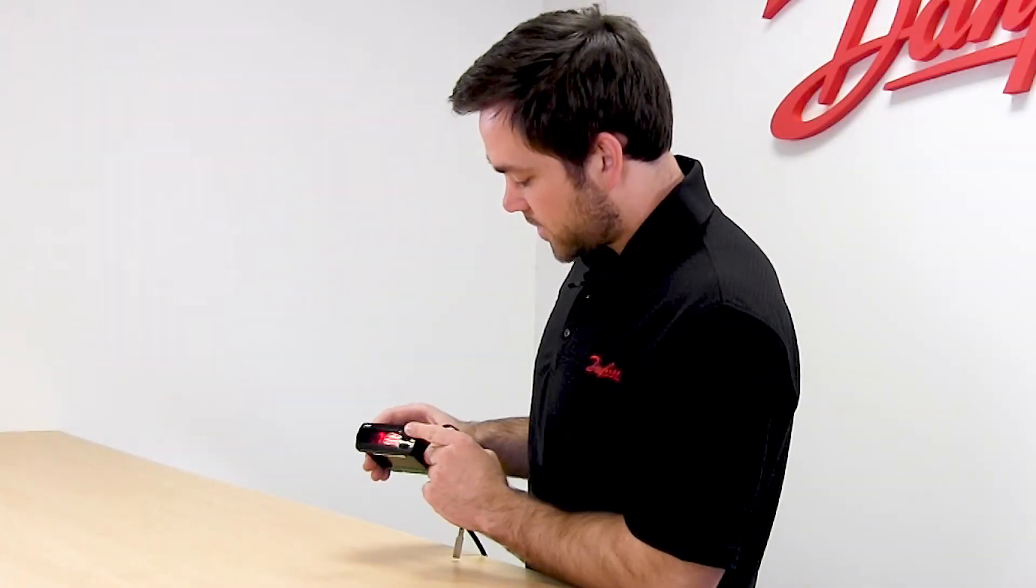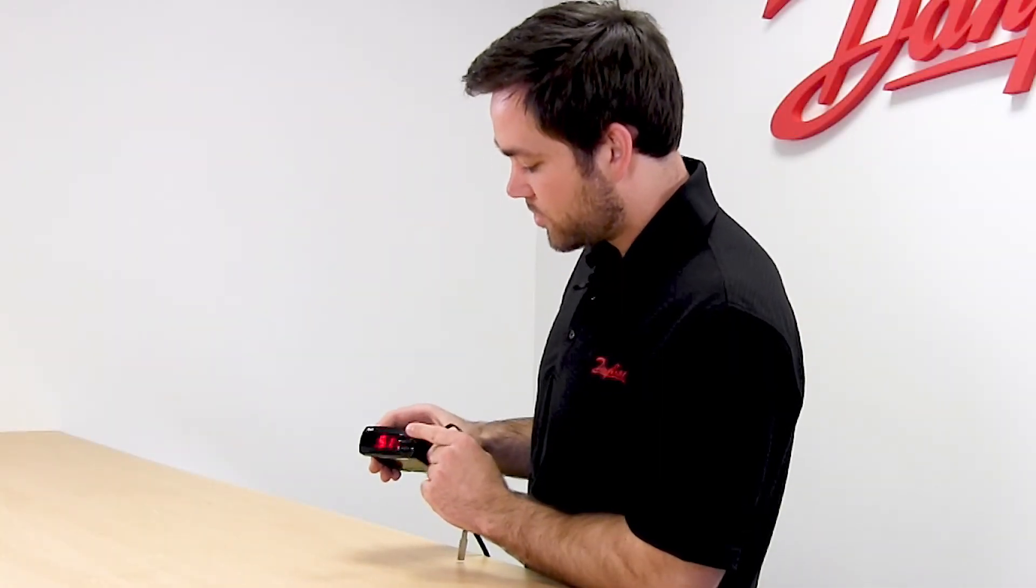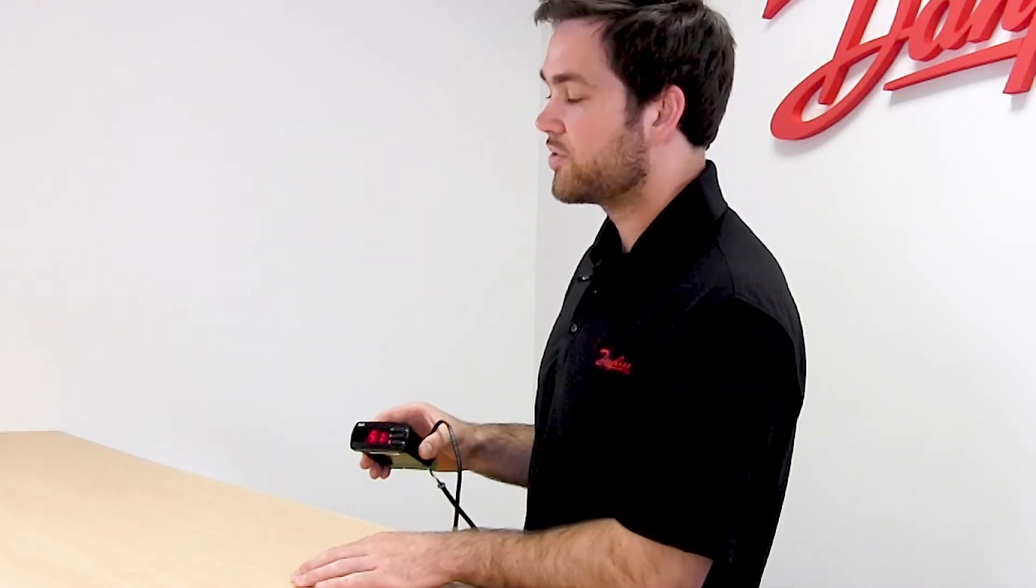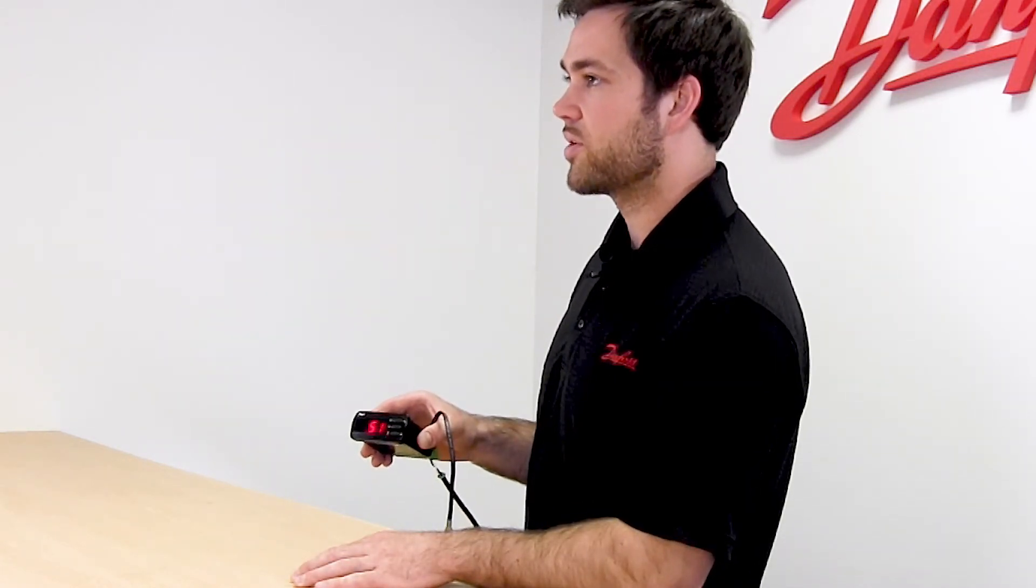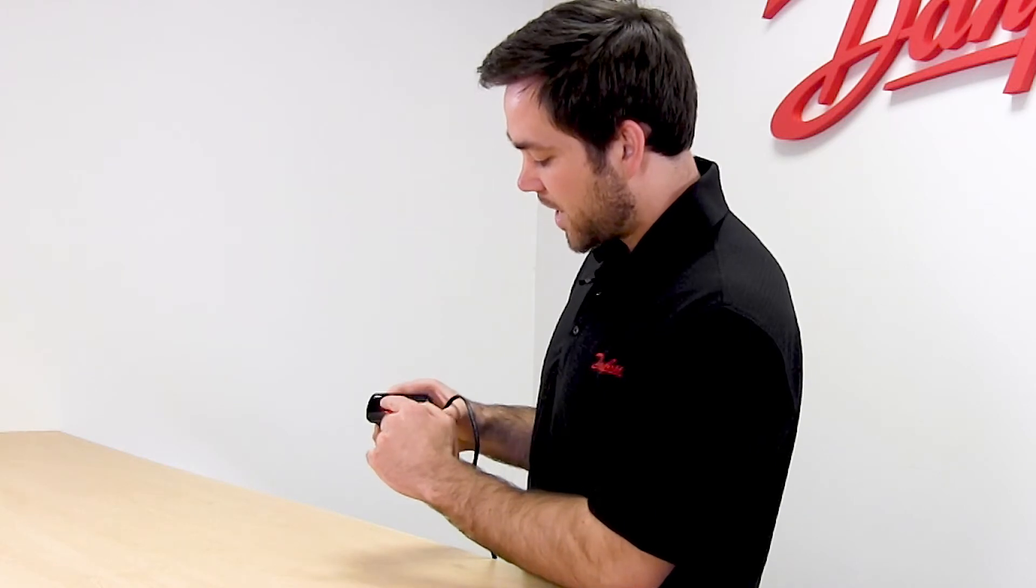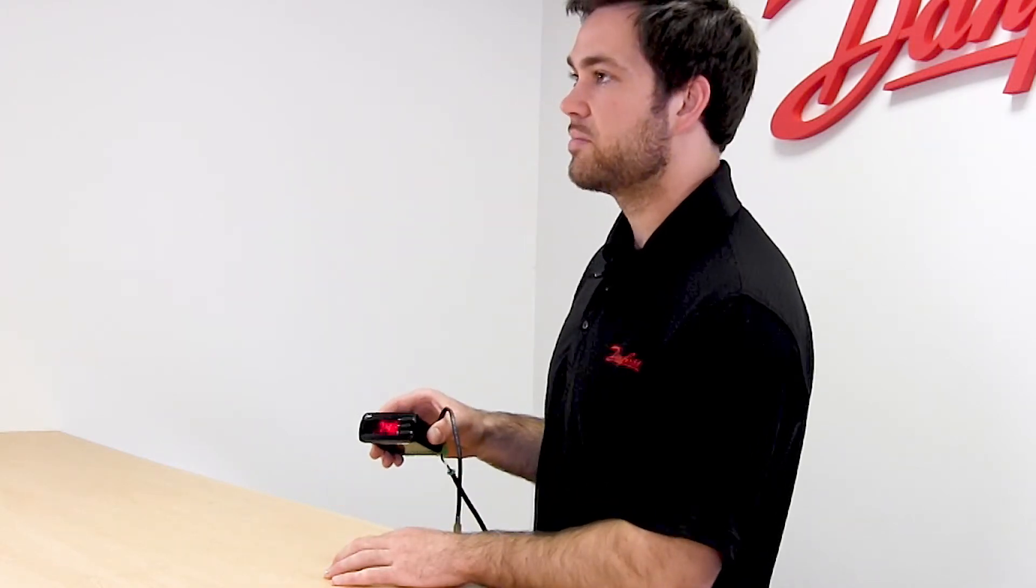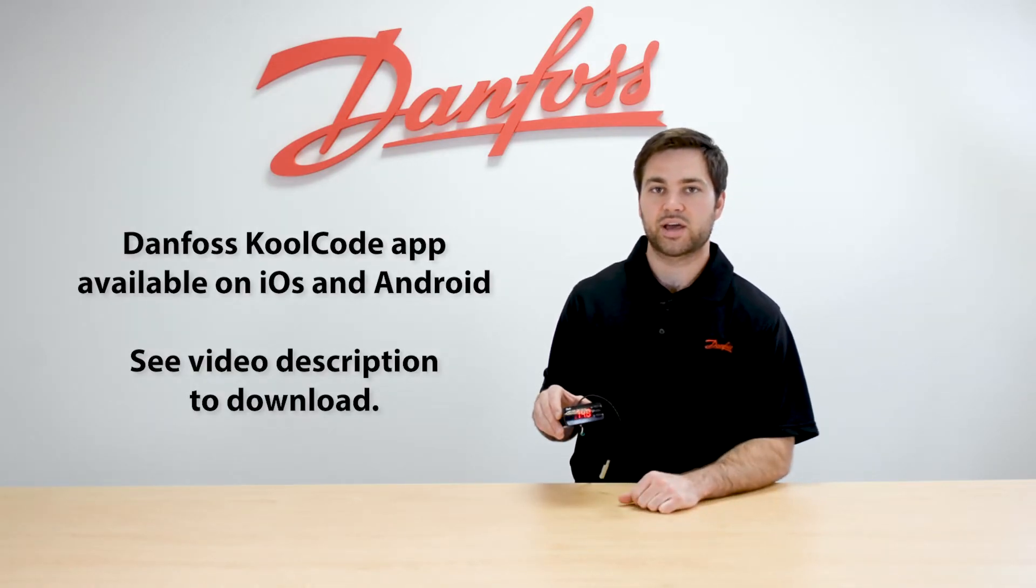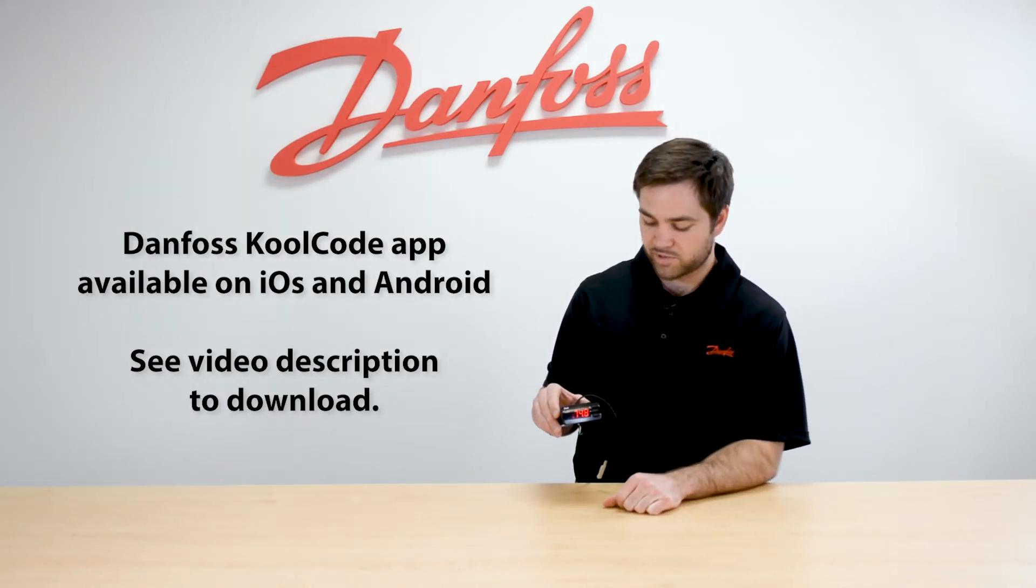The short press of the top button will also take you to either a status or alarm code, and you can scroll up to see if you have multiple alarms or errors. If all three icons on the left are flashing it means you have an alarm on your controller, and you can use the cool code app to look up what your particular alarm is.